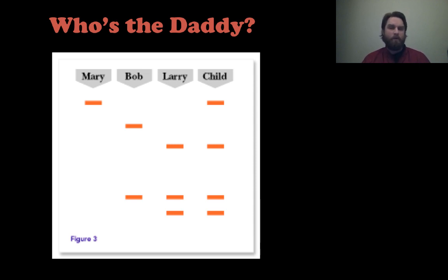So you have Mary, the mother, on the left-hand side. That's her DNA fingerprint for certain genes. You have Bob and Larry, who are the two candidates for the father here. And if we look at the child, we try to compare the child's DNA fingerprint to either Bob or Larry. And we can see here that the child is much more similar to Larry than the child is to Bob. So therefore, we would say that Larry is most likely the father here.